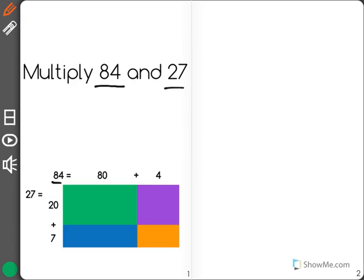Now 84 as you can see is broken up into 80 plus 4 and 27 is broken up into 20 plus 7. So we're going to find partial products.